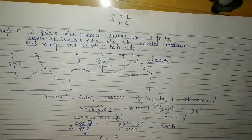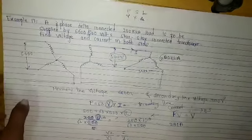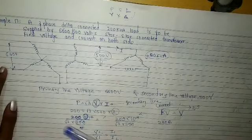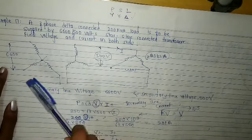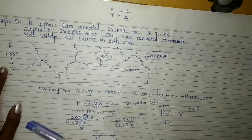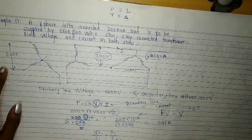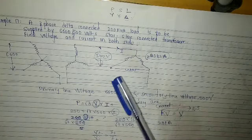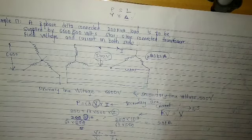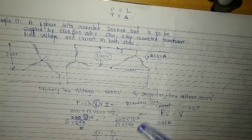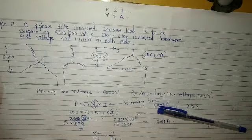Numericals are very important — you can score full marks in numericals. Please prefer numericals over theory so that you will score more in your board exams. Just remember: in delta, voltage values for line and phase are the same; in star, current values for line and phase are the same. If you have any doubts, you can ask.